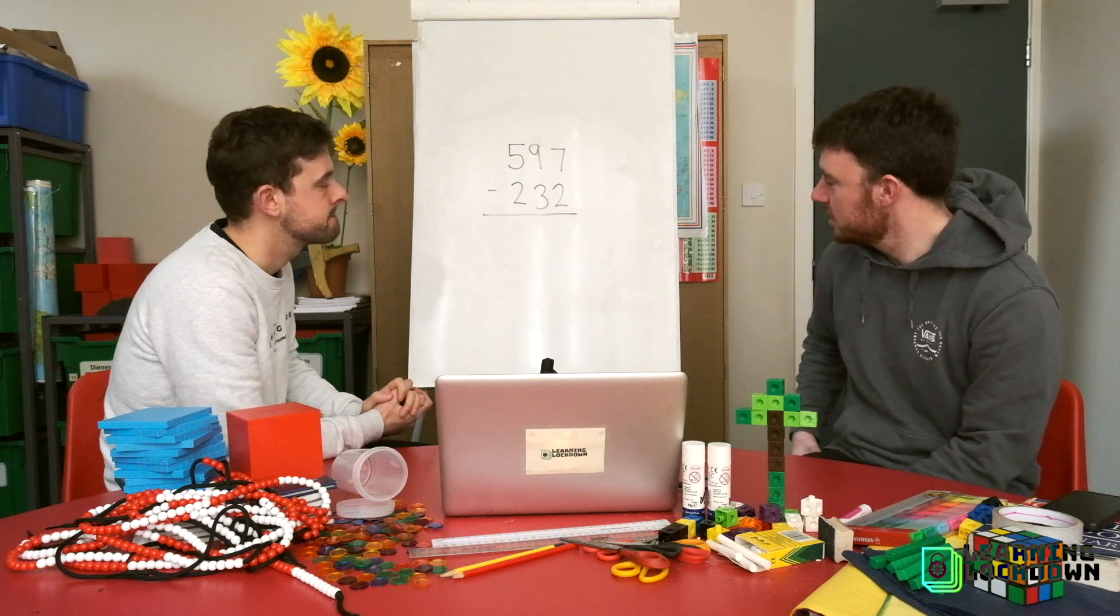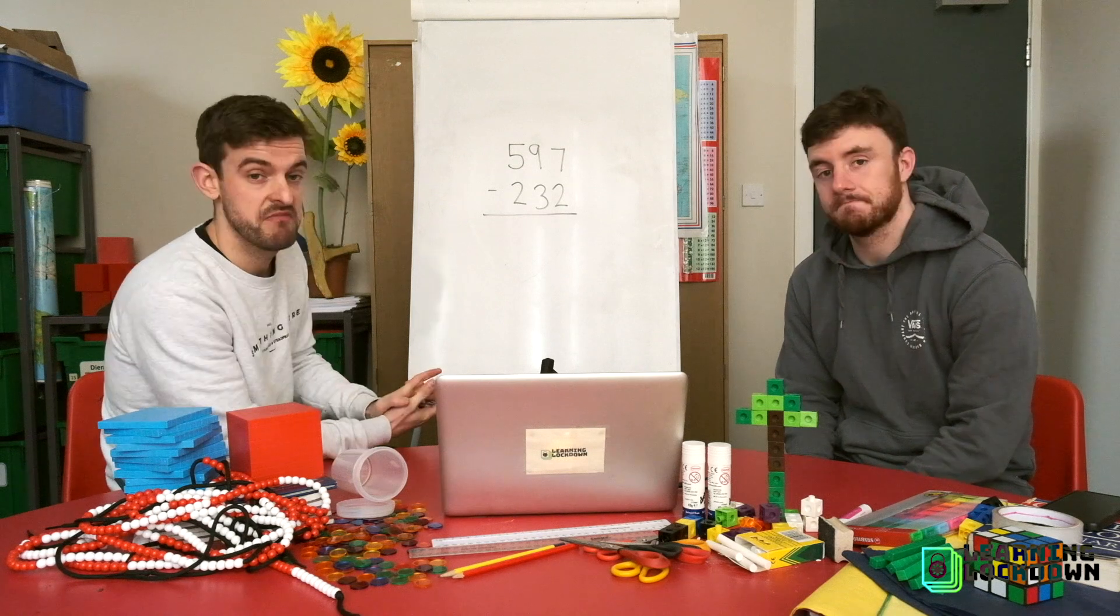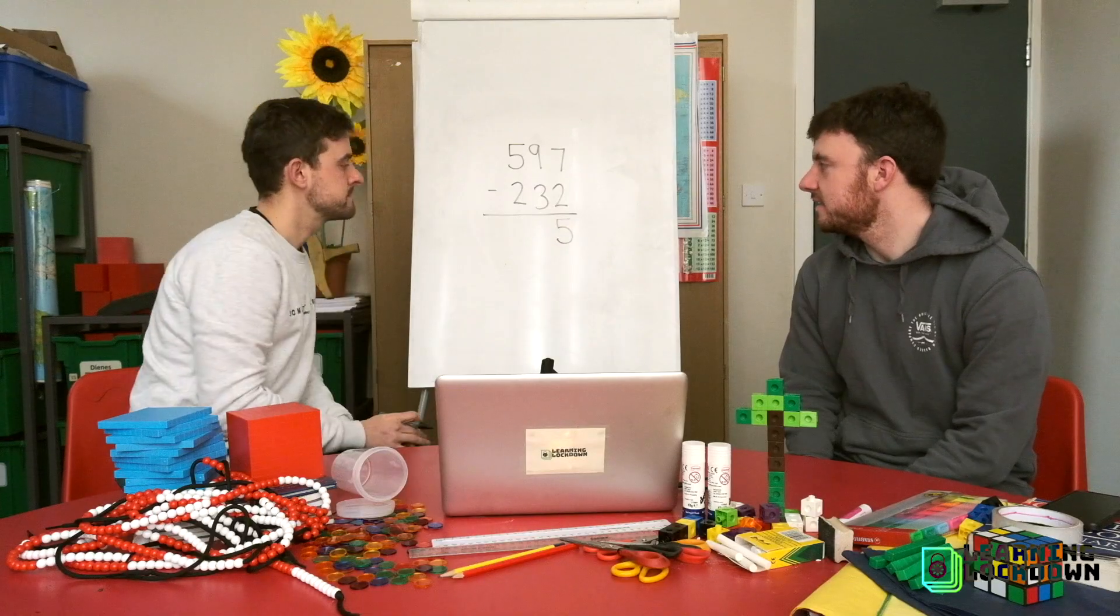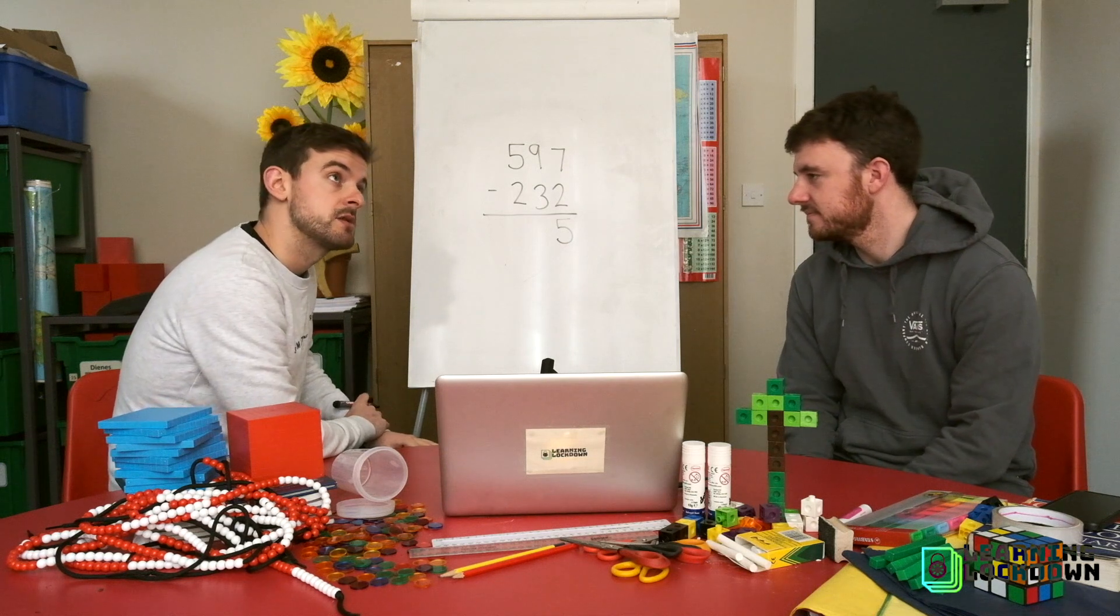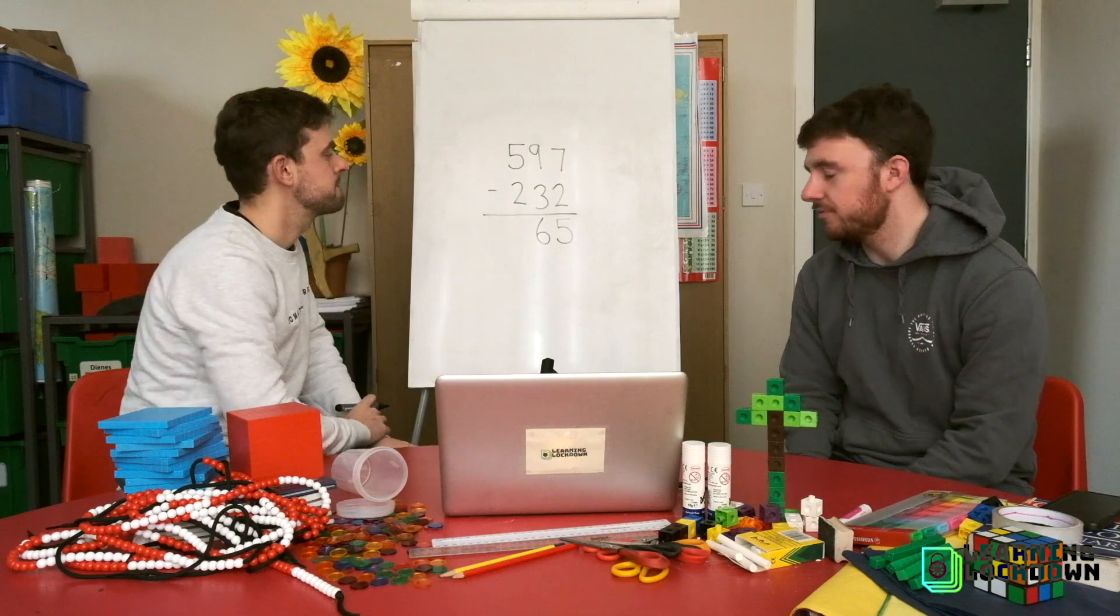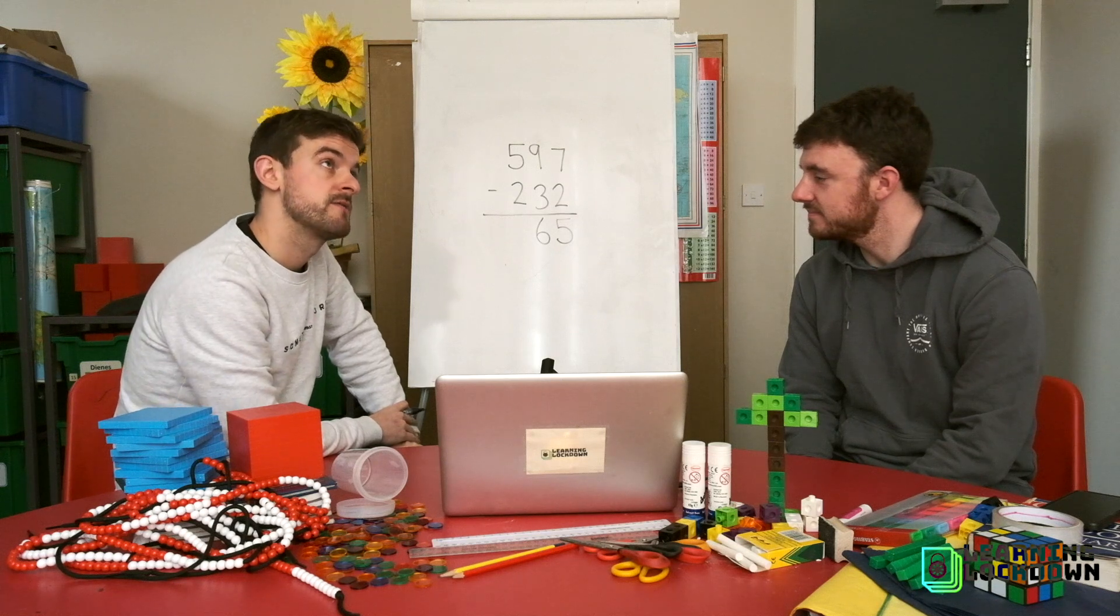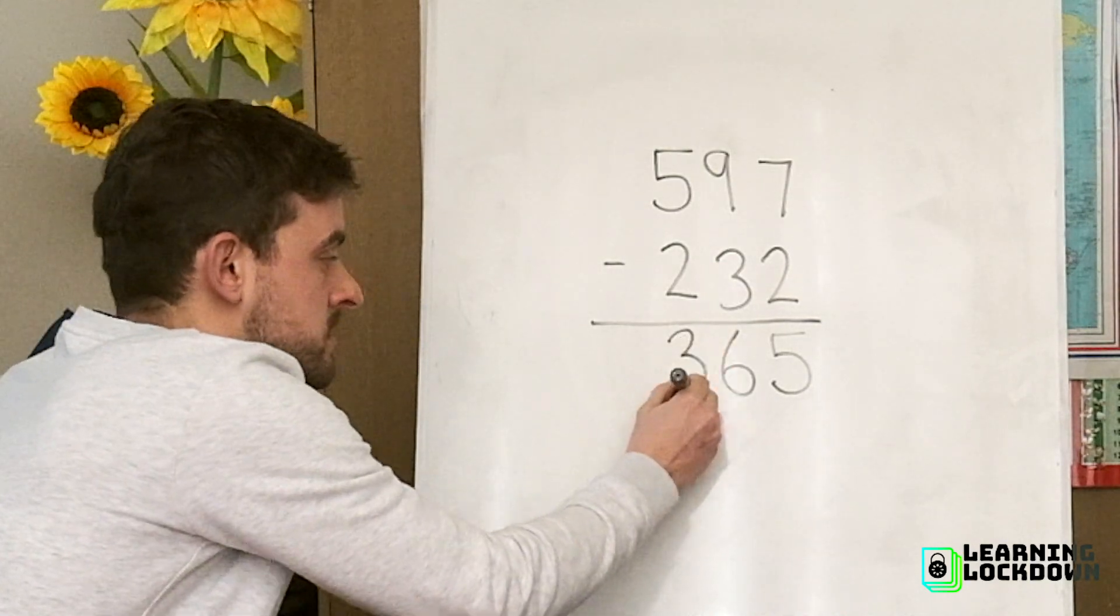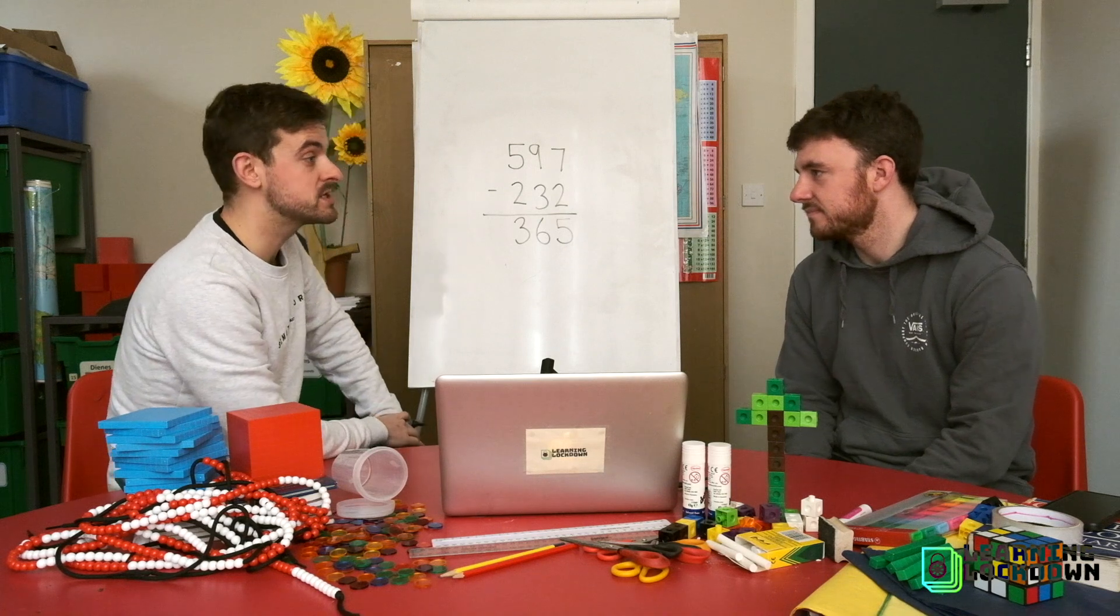And you'll see why a little bit later on. So first of all Mr. A. 7 subtract 2. 7 subtract 2. Well I know my number bonds. 5. 7 ones. Take away 2 ones is 5 ones. Next we have 9 tens subtract 3 tens. 9 lots of 10 take away 3 lots of 10 is 6 lots of 10. And finally 500 subtract 200s. I know 5 take away 2. So therefore I know 5 lots of 100 take away 2 lots of 100 is 3 lots of 100. And it's as simple as that. My answer is 365. The same as days in a year.